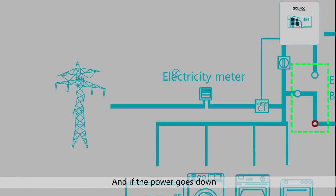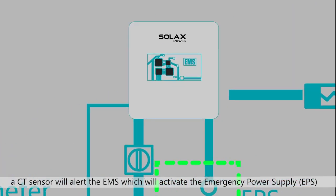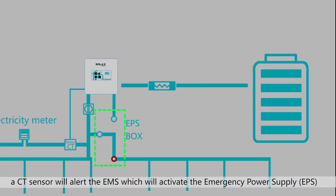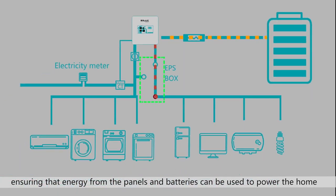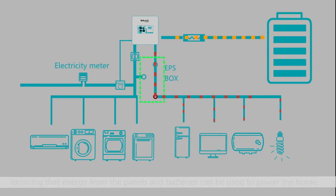And if the power goes down, a CT sensor will alert the EMS which will activate the Emergency Power Supply, ensuring that energy from the panels and batteries can be used to power the home.